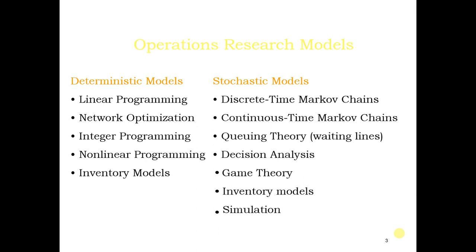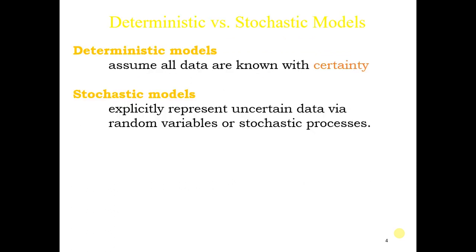Stochastic models, which we have already studied in probability and queuing theory, deal with unseen or unknown data represented as random numbers. We are not going to consider stochastic models in this course. To summarize: for deterministic models all data are known with certainty, while for stochastic models the data is represented as random numbers.